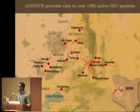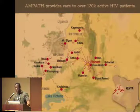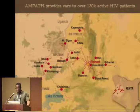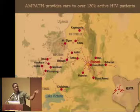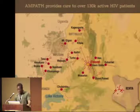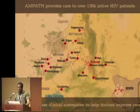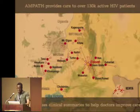AMPATH faces this particular challenge. AMPATH is one of the largest HIV treatment programs in Sub-Saharan Africa, providing care to about 130,000 active HIV patients through 52 clinics spread across the Western Province, with a catchment area of about 2 million people. Over the last year, AMPATH has used printed clinical summaries to provide some decision support to doctors seeing patients.